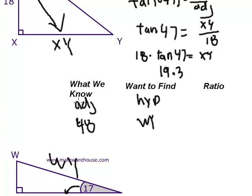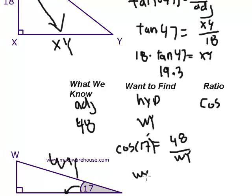So, what of the SOHCAHTOA ratios involves adjacent and hypotenuse? And that's cosine. So, our ratio is the cosine of 17. Remember, cosine equals adjacent over hypotenuse. 48 over WY. So, we're going to cross multiply, which lets us bring the WY to the top, which equals 48 over cosine 17. And when you punch that into your calculator, 48 divided by cosine of 17 rounds to 50.1.